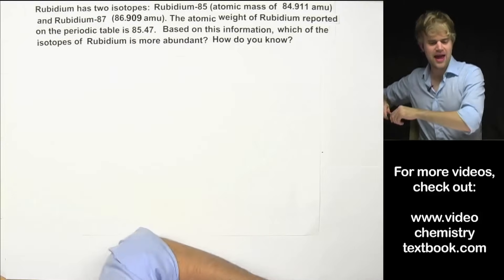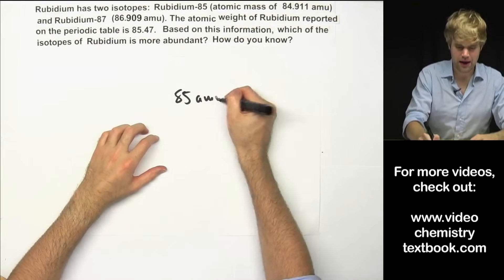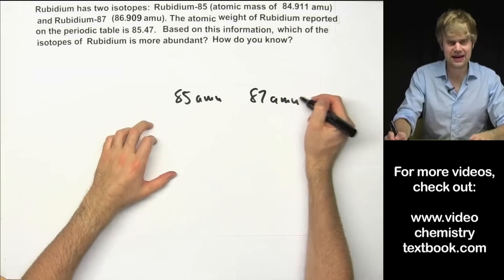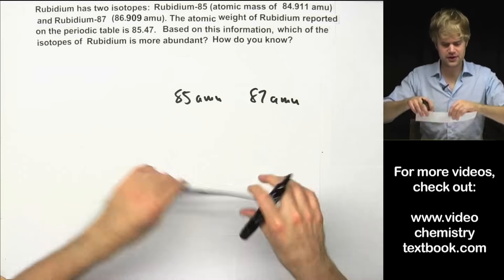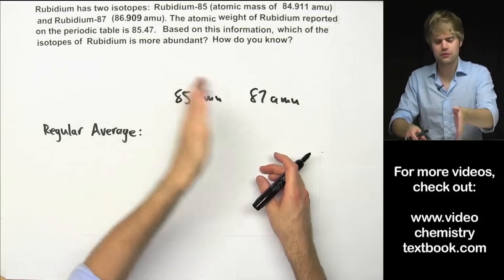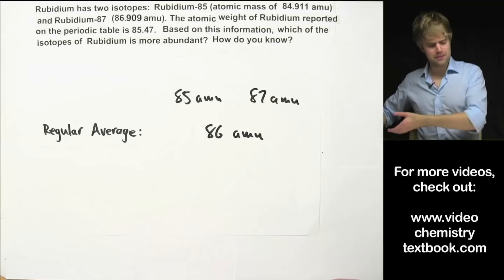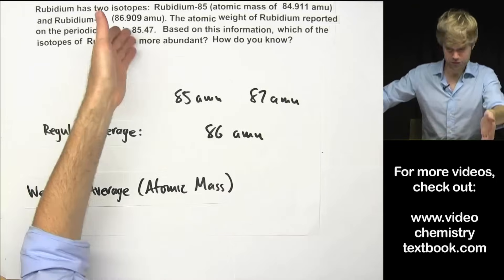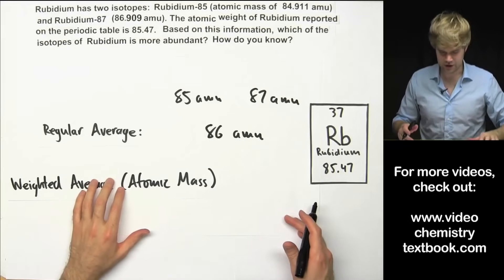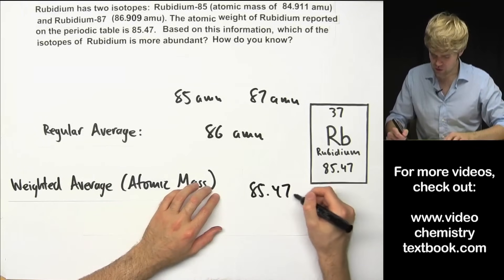We have rubidium-85 which weighs pretty close to 85 amu and then we have rubidium-87 that weighs pretty close to 87 amu. So for these two things the regular average if we had the exact same amount of both would be right in the middle, it would be 86 amu. But instead we can tell from here and from the periodic table that the atomic mass of rubidium, the weighted average isn't 86, it is 85.47 amu.